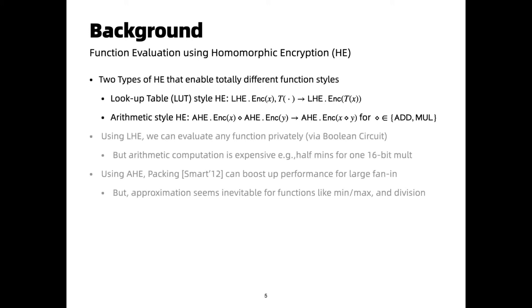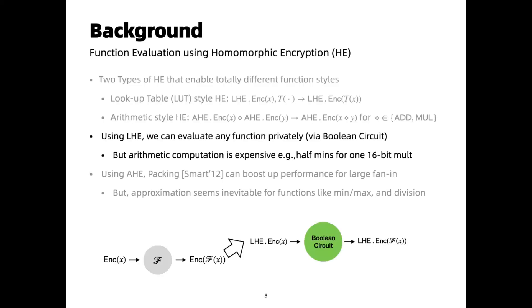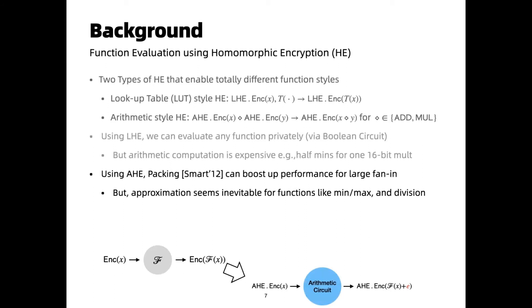Different types of homomorphic encryption support different styles of functionality. For example, we have lookup table homomorphic encryption (LHE) as one kind. The other kind can allow adding and multiplying encrypted values (AHE). When using LHE, arbitrary Boolean functions can be privately evaluated. However, the price for evaluating large F(x) in Boolean circuit arithmetic is high. On the other hand, we can use packing techniques to accelerate large F(x) in arithmetic computation using AHE. Also, approximations seem inevitable for evaluating non-polynomial functions, such as division.